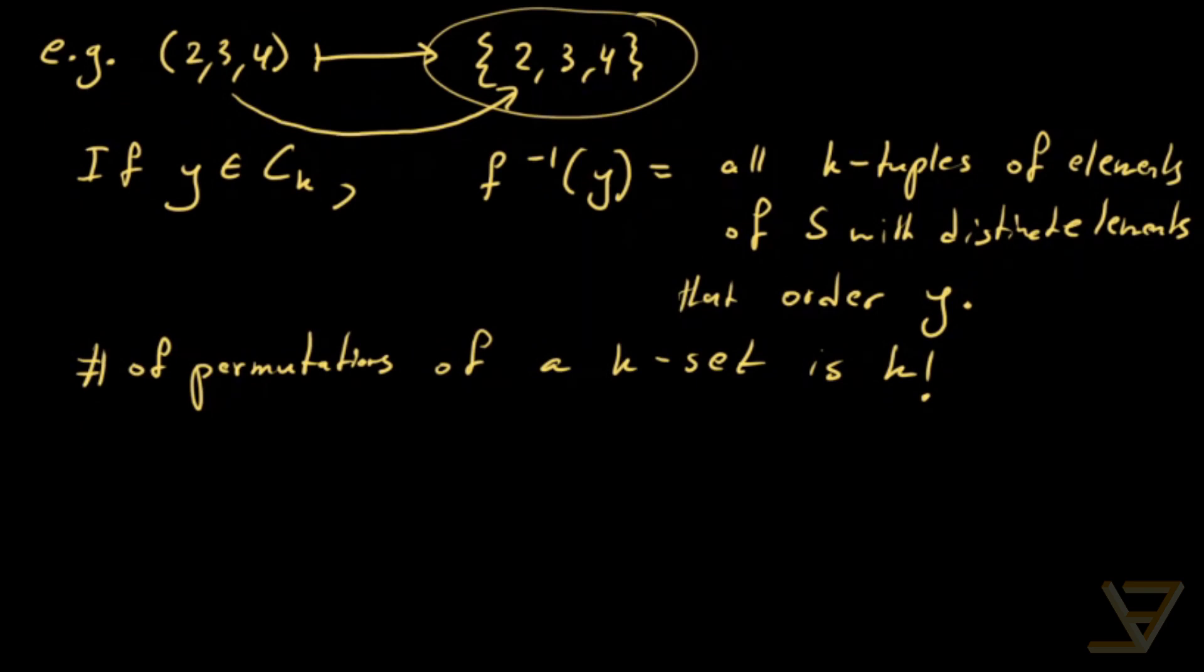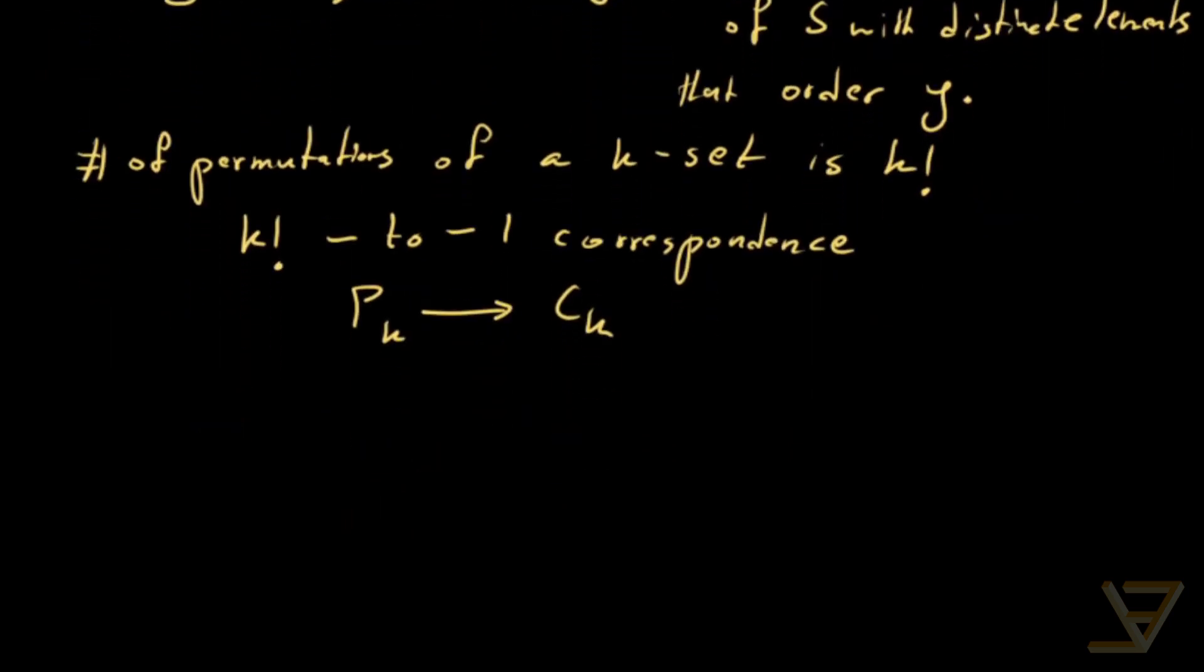So that means we have a k factorial to 1 correspondence, the map that we described above from P_k to C_k. And so what that allows us to do is say that by the correspondence principle